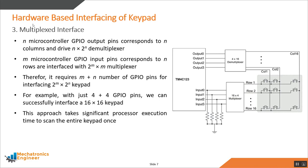In multiplexed interfacing, the matrix is driven through a demultiplexer for columns and read through a multiplexer for rows, requiring only m+n GPIO pins to interface a 2^m × 2^n keypad. For example, a 16×16 keypad needs only 4+4 GPIO pins. The limitation is that scanning the entire large keypad takes significant processor execution time.